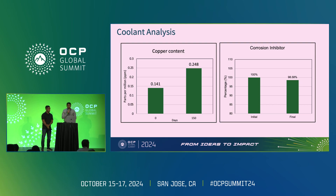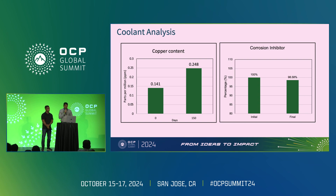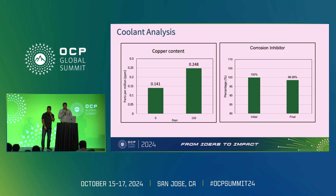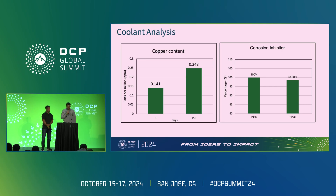Next is the coolant analysis. Coolant samples were collected every 30-day interval from the test setup, and we made comparisons for different parameters at day zero and the final day of analysis. For the copper content — where the main source would be the cold plate — at day zero the baseline sample had a copper content of around 0.141 ppm, which is almost 141 parts per billion inside the coolant. At the end of testing there was a small increase to 0.248 ppm, corresponding to 248 parts per billion. This is a very small increase and is within the recommended standards of the vendors, which typically flag copper content increases above 3 to 3.5 ppm as requiring critical measures to replace the coolant.